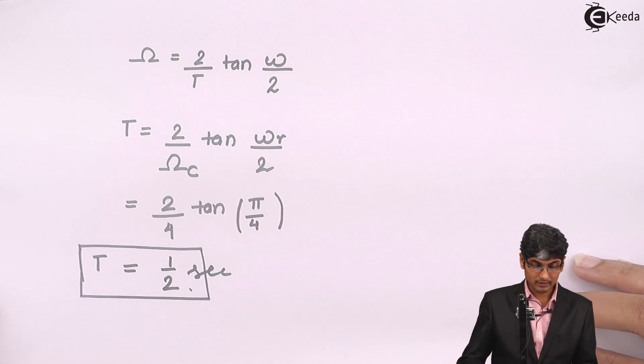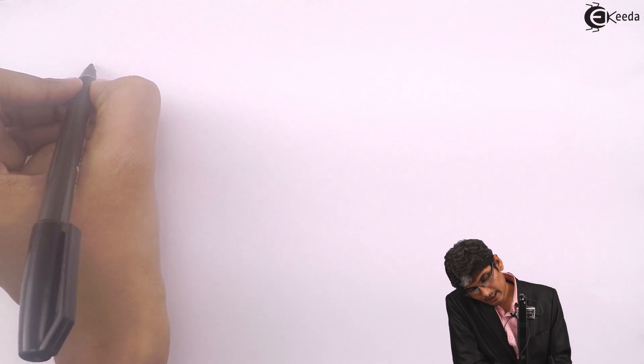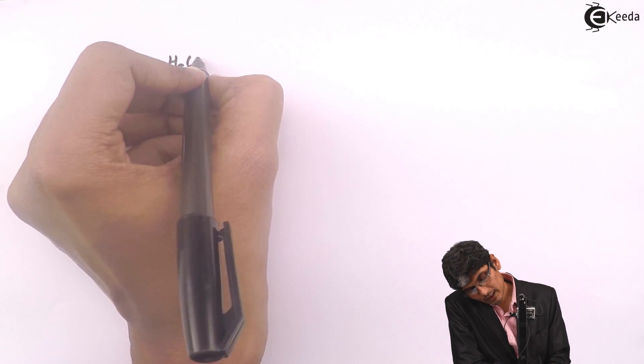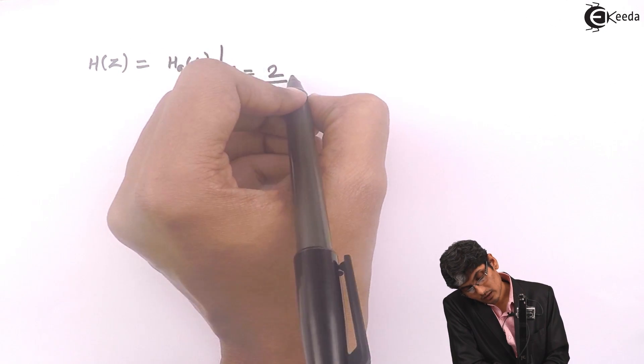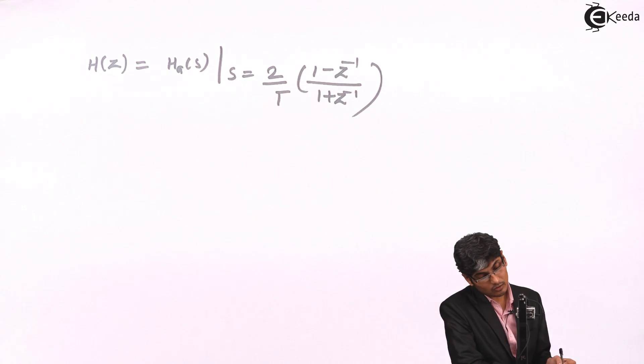Now we have to just replace our H of S and get H of Z. So I can write as H of Z equals to H A of S if S is equal to 2 by T 1 minus Z inverse upon 1 plus Z inverse.